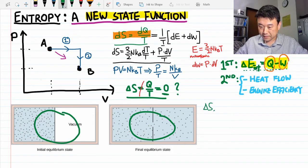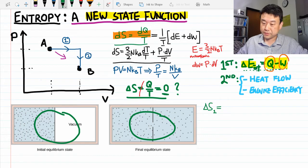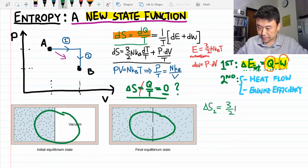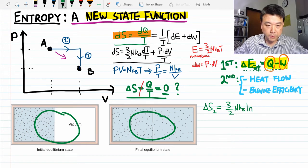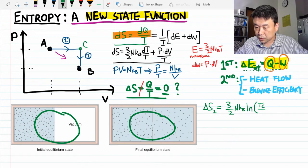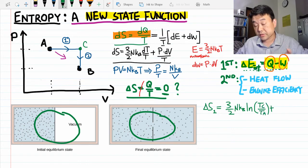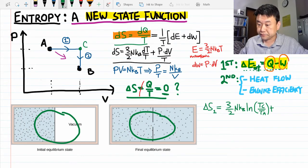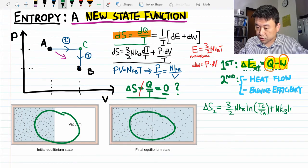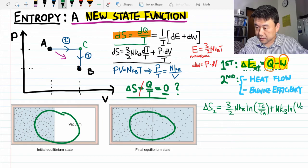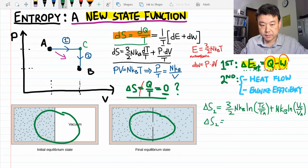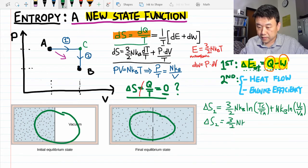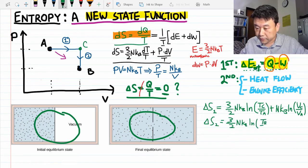So the change of entropy in process one is equal to, looking over at the result, it's three halves Nk natural log of, oh, I need to label the point. Let me call that C, Tc over Ta, plus there's a change of entropy associated with the change in volume, Nk natural log of volume at C over volume at A. Change in entropy in process two is, there's no change in volume, just change in temperature. Three halves Nk, the final temperature over the initial temperature.